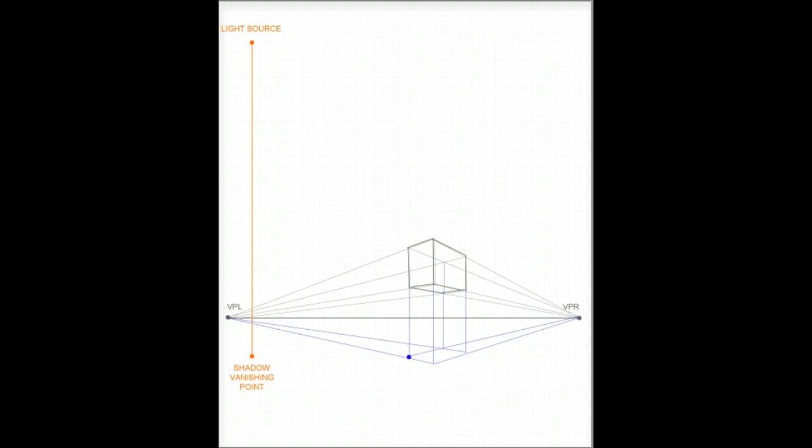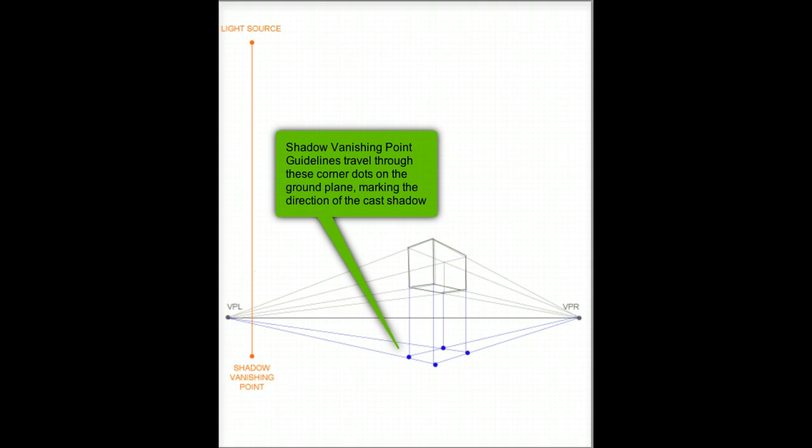These points are here, here, here, and here. Now the shadow vanishing point guidelines will travel through these corner dots on the ground plane, marking the direction of the cast shadow, which I will show you in just a moment.